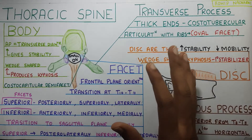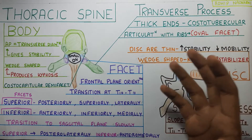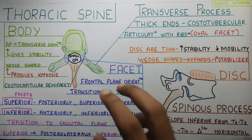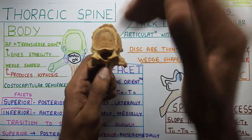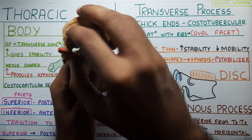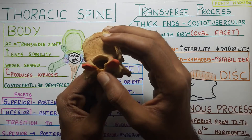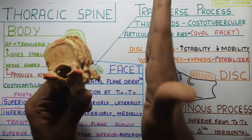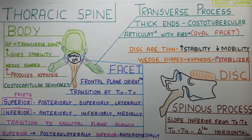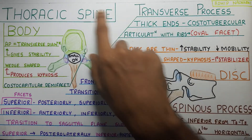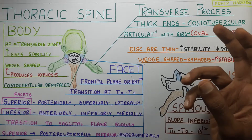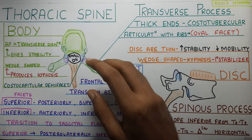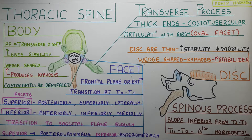With that, we finish off the thoracic spine structure. To recap: the body produces kyphosis because of its wedge shape, along with the thin wedge-shaped disc. The facets are oriented in the frontal plane, which allows more lateral flexion movement, and then they start transitioning toward the sagittal plane. The transverse process articulates with the tubercle of the ribs via costo-tubercular articulation. Finally, the spinous process is inclined downward and the vertebral foramen is small and circular.